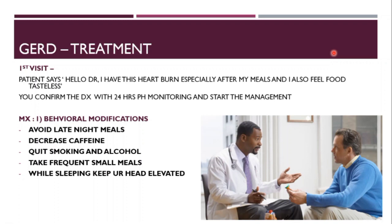Behavioral modifications alone won't be enough. You should also add a proton pump inhibitor like omeprazole, which will decrease acid production. Even if the lower esophageal sphincter is loose, when you decrease acid production, there won't be much acid ascending up to cause heartburn. That's why PPIs are given initially.